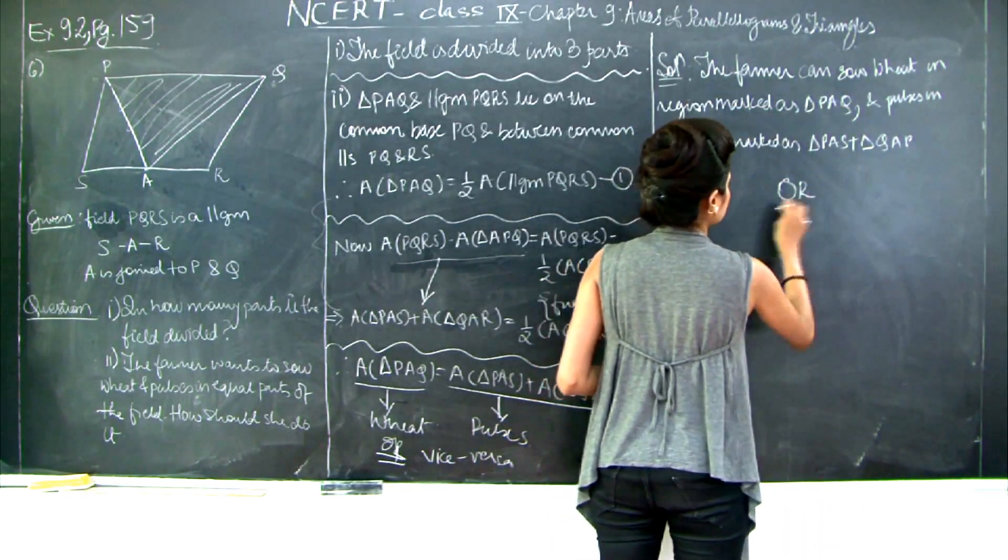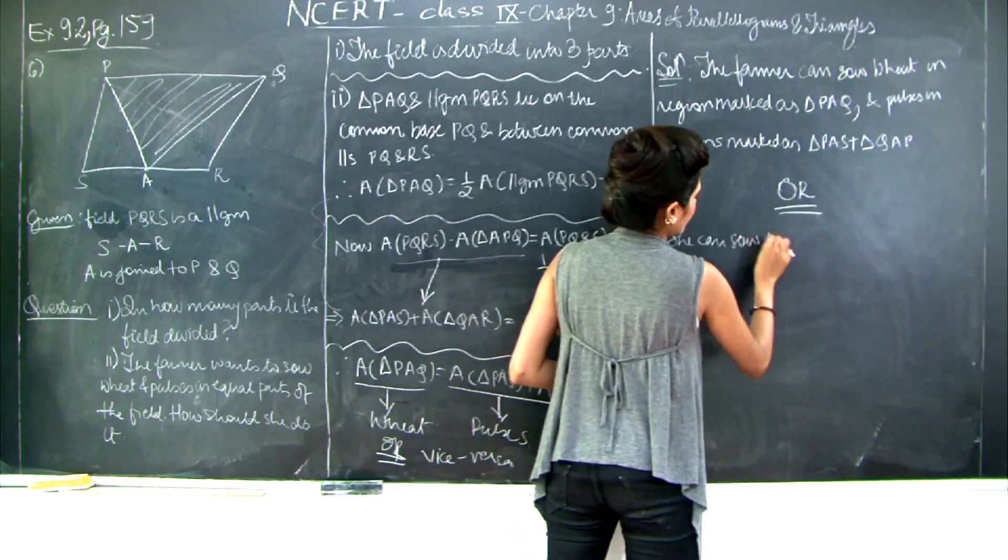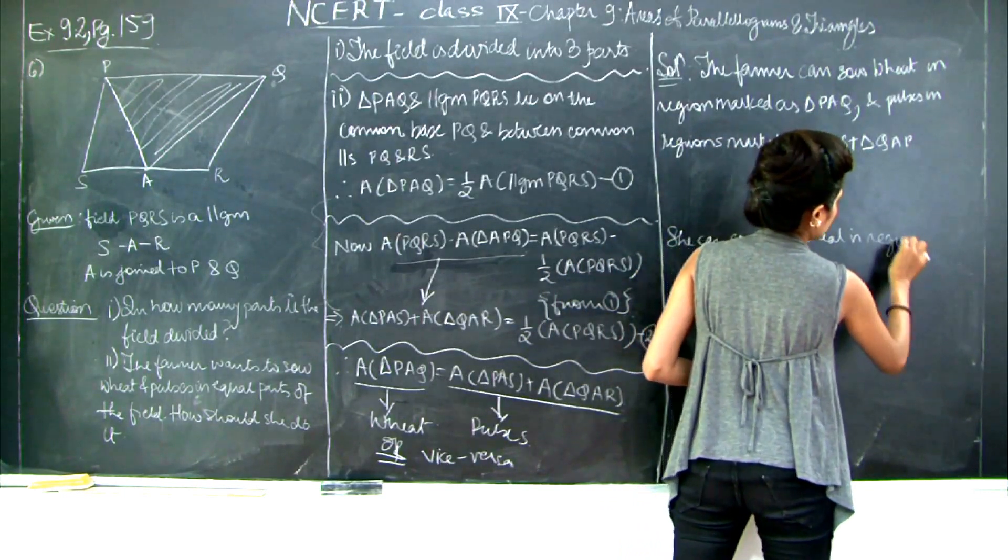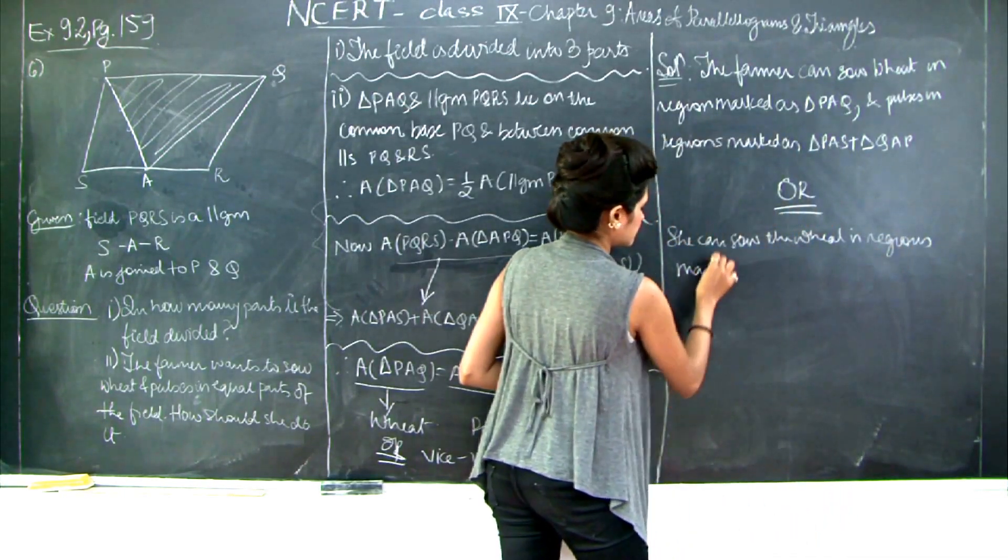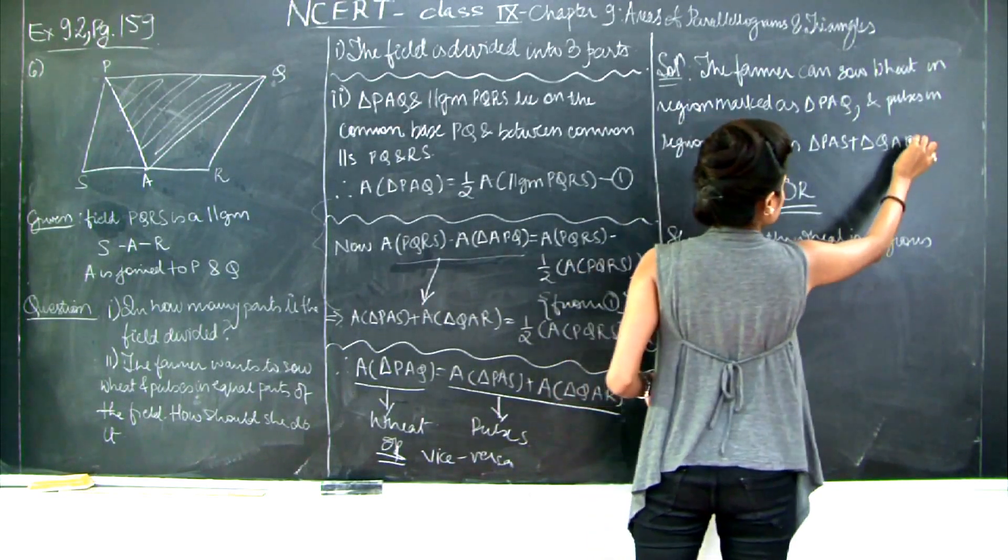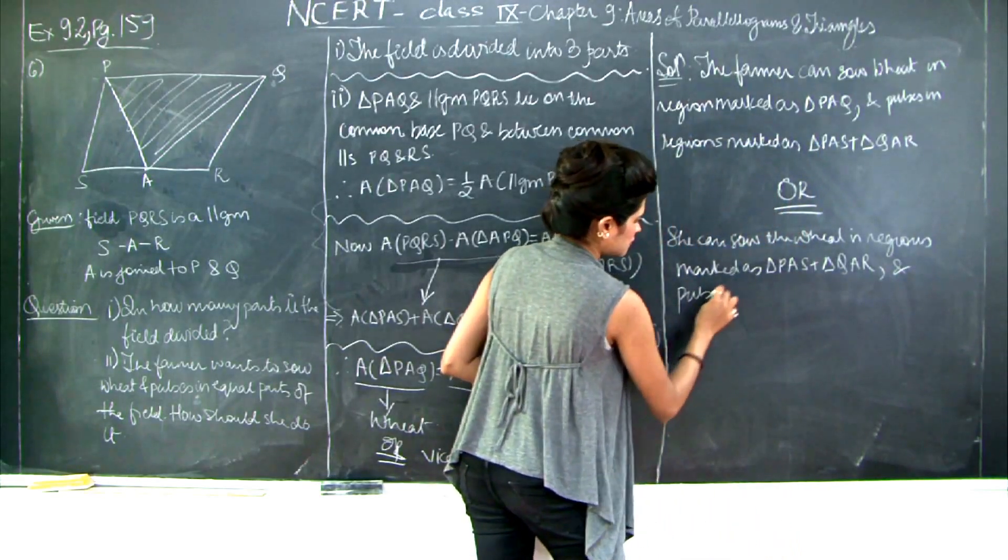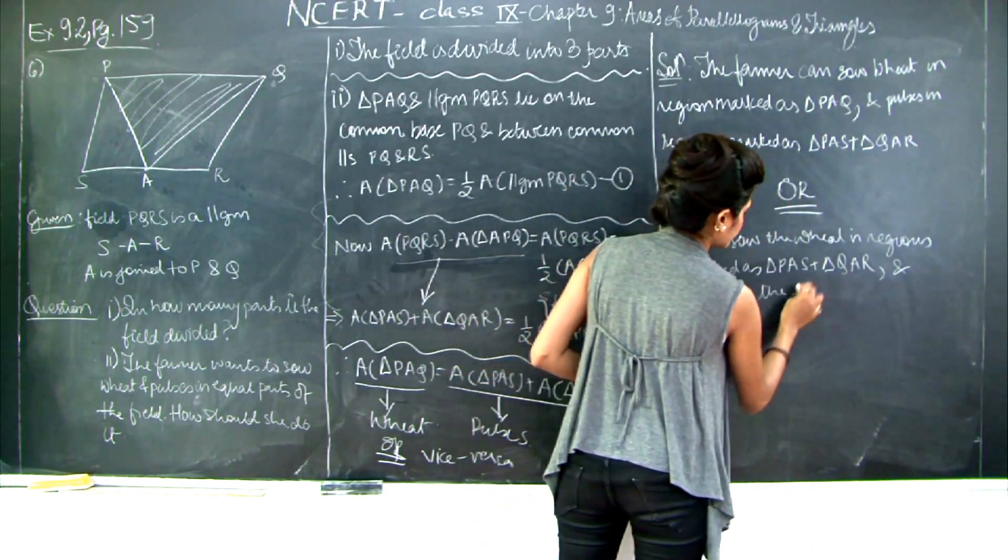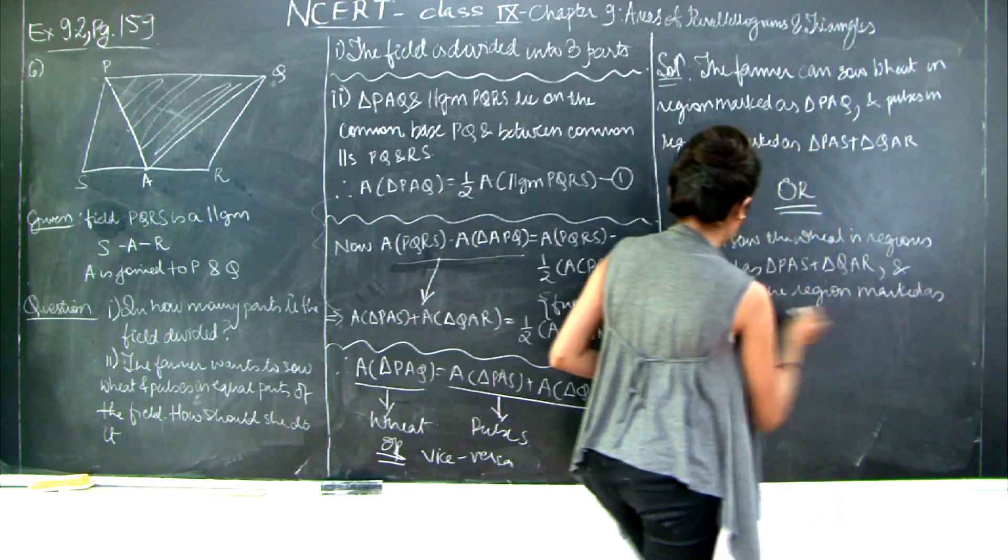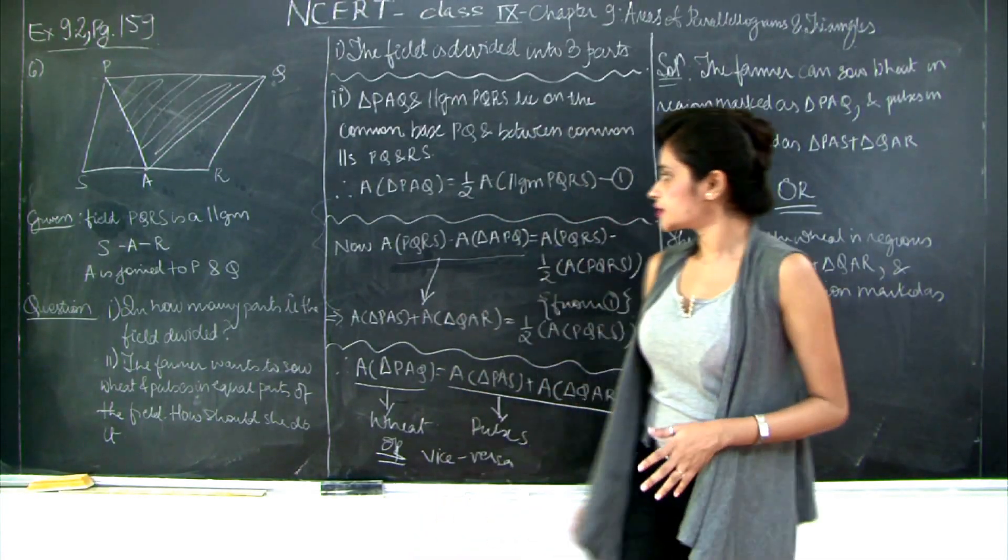Or she can sow the wheat in region marked as triangle PAS plus triangle QAR and pulses in region marked as triangle PAQ.